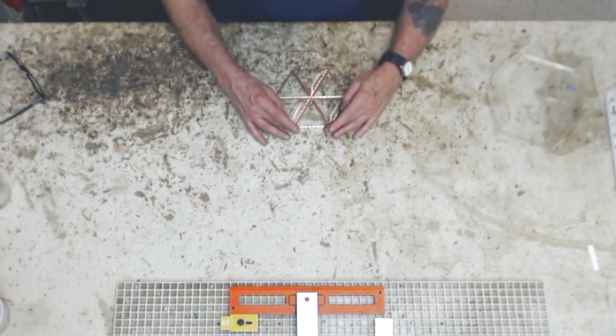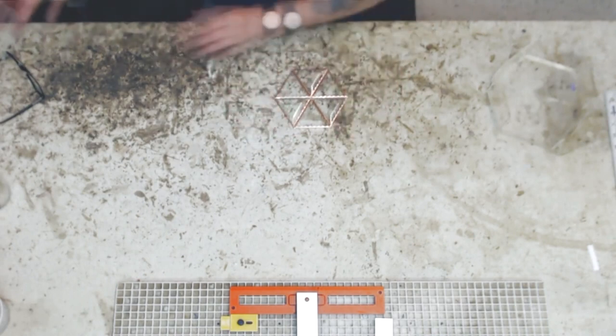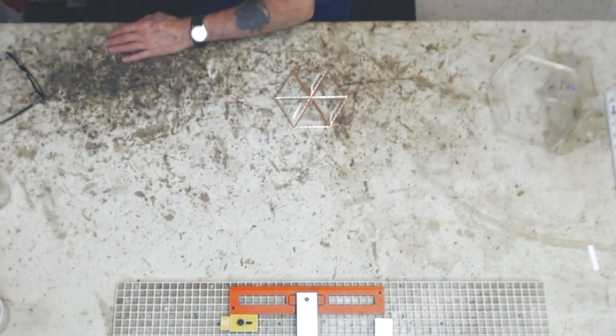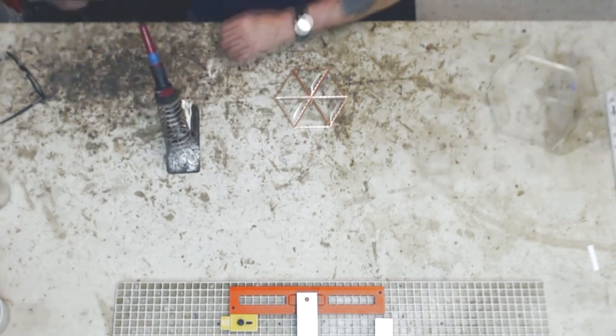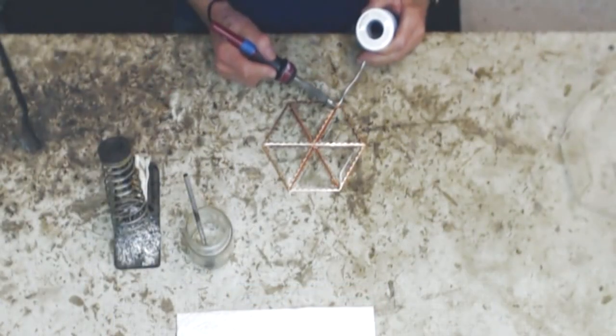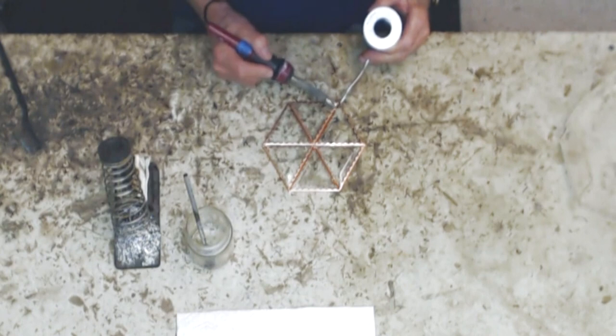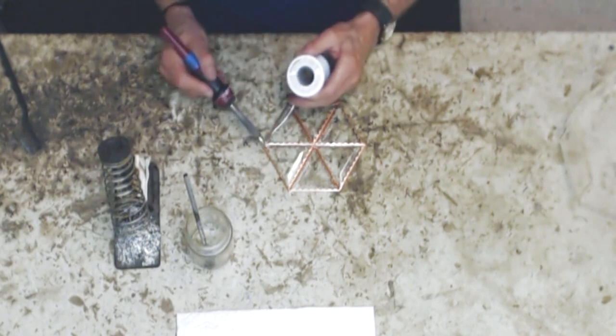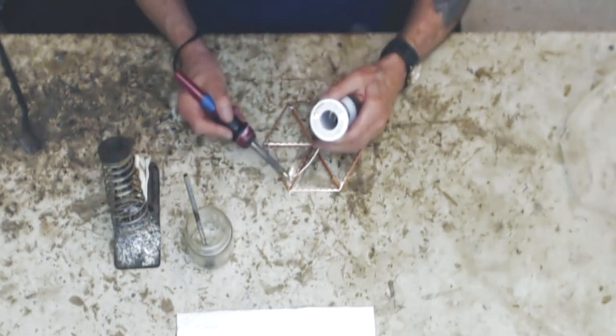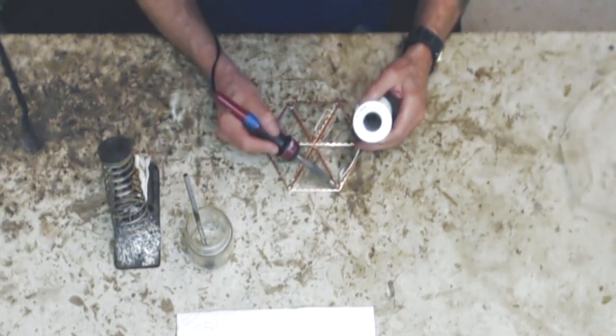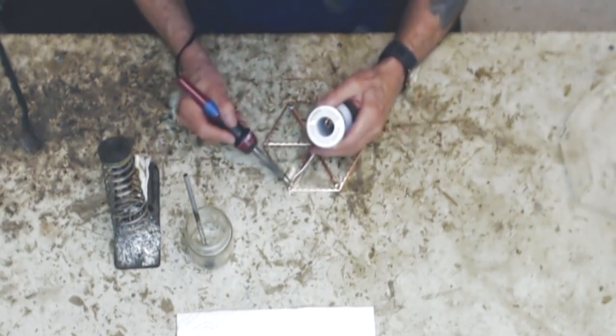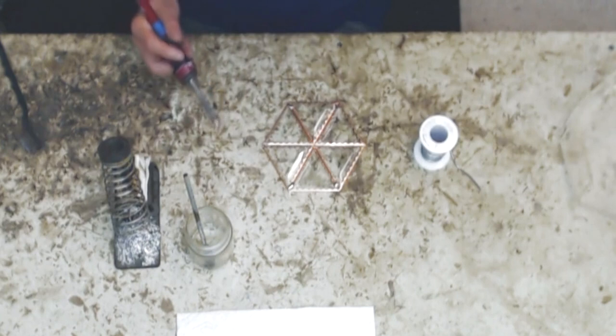So let's get my iron turned on here, get everything cranked up. Tack these in place before I solder them to make sure that they don't get away from me and move. So I'm just going to tack all six of these outer pieces.